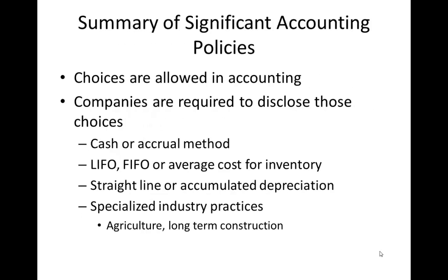The first category is the Summary of significant accounting policies. As we know in accounting, some choices are allowed, but all companies are required to disclose those choices. Those choices include whether you use the cash or accrual method, what method you use for your inventory — LIFO, FIFO, average cost, or some other method such as lower cost of market.